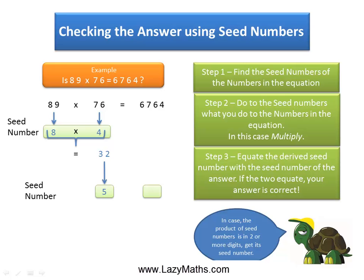Now find the seed number of the number on the right side of the equation which is 6764. So the seed number of 6764 is 5.